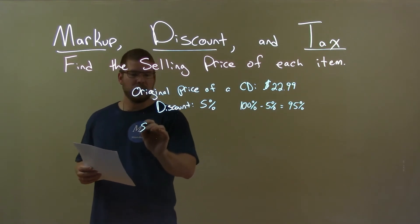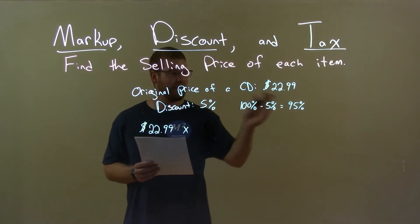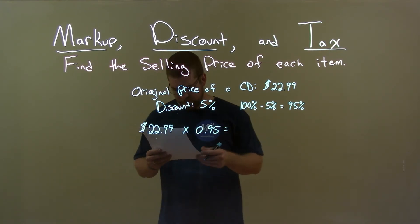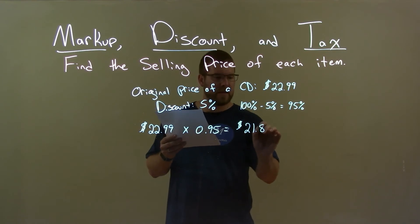So, now our calculation. Take $22.99, we multiply that by 95% as a decimal, 0.95, and that gives us a final answer, discounted price of $21.84.